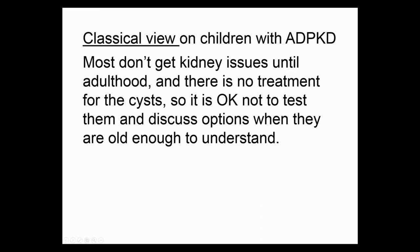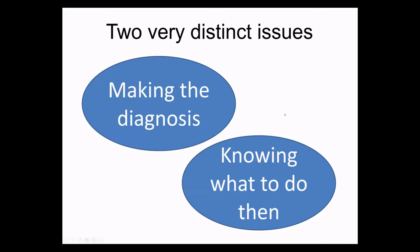What do we think about children? The classical view — what I was taught at medical school — is that they don't get kidney issues, meaning they don't get kidney failure, and there's no treatment for cysts. This was before Tolvaptan. So the thinking was: it's okay not to test children and young people, and it's fine to wait until they reach 18 or 21 and then discuss options when they're old enough to understand. This is what most adult nephrologists, GPs and health professionals you come into contact with will believe. But there are distinct issues now. People are uncertain about making a diagnosis because they're worried about the number of cysts and how to make that diagnosis in children, and they're also worried about what you do — since it was thought you couldn't do anything.